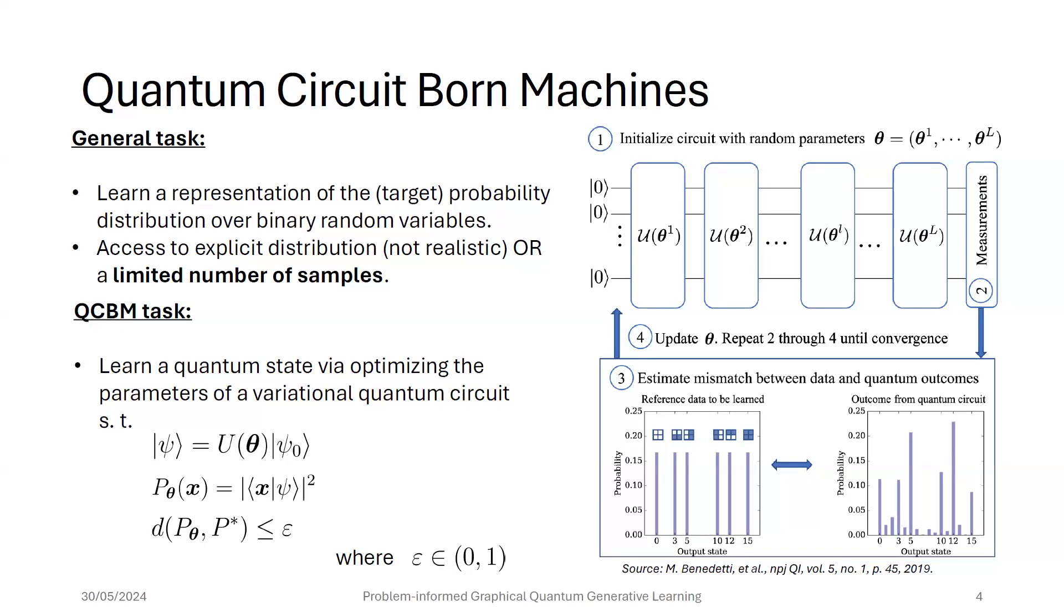If we want to translate this task into the language of quantum circuits, then we can say that we want to learn a quantum state by optimizing the parameters of a variational quantum circuit, such that if we measure that final quantum state in the computational basis, we get samples from a probability distribution that is epsilon close to the target distribution. We apply all these parametrized layers of unitaries to our quantum state, then we measure in the computational basis, calculate the mismatch between the training set and our samples, and then update the parameters based on some gradient-based or gradient-free training scheme.